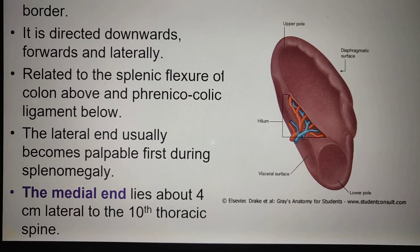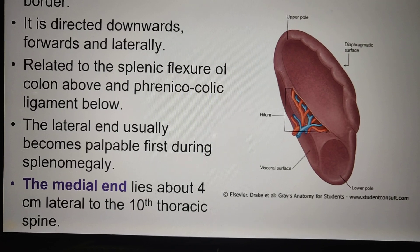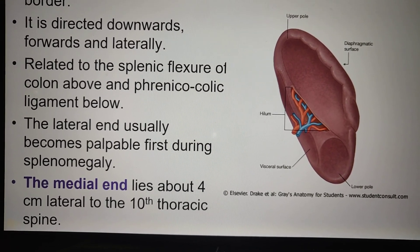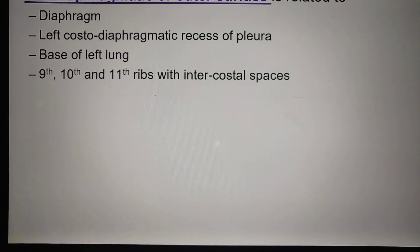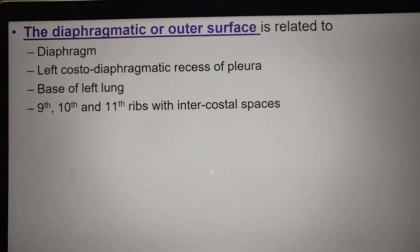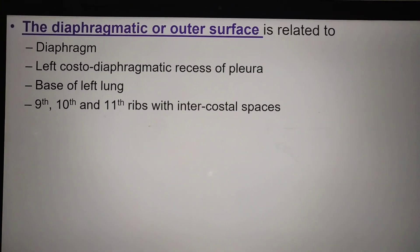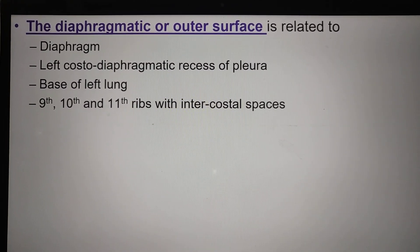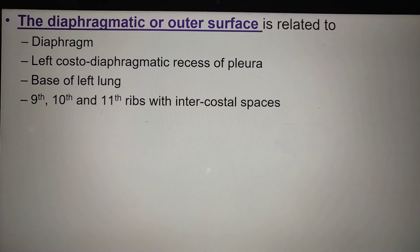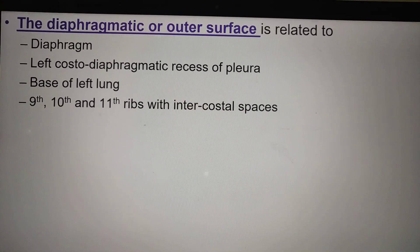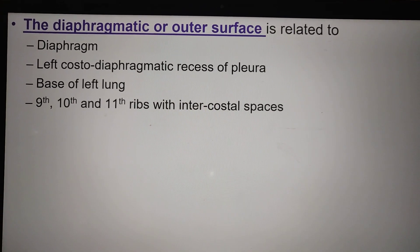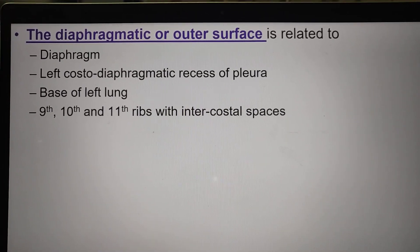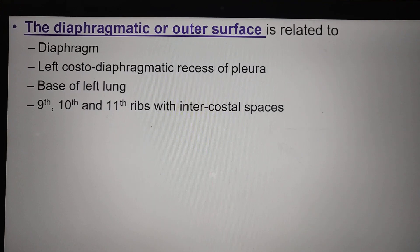The medial end lies about 4 cm lateral to the 10th thoracic spine. The diaphragmatic or outer surface, also called the costal surface, is related to the diaphragm, the left costodiaphragmatic recess of the pleura, the base of the lung, the 9th to 11th ribs, and the intercostal spaces.